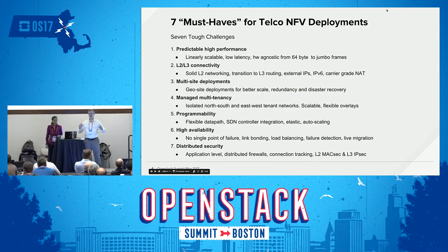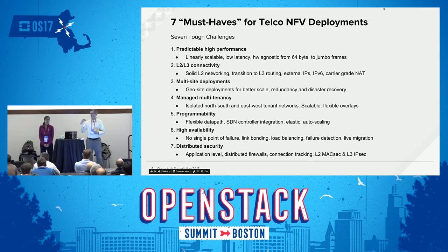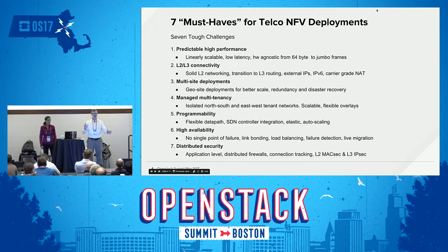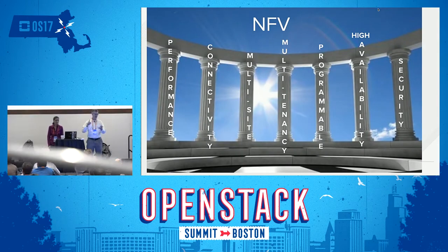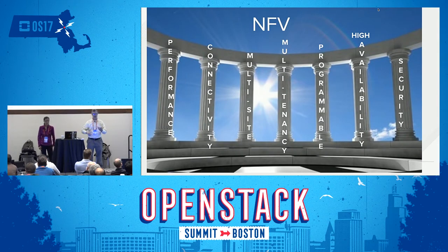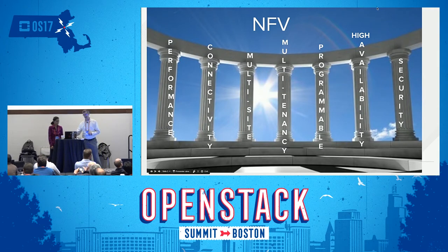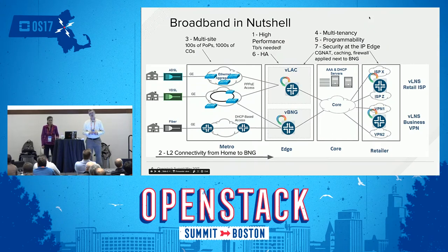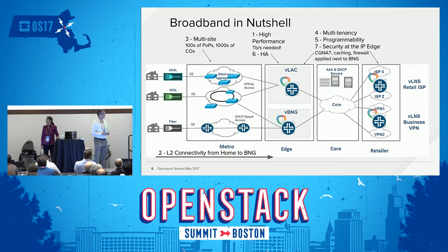We're going to touch on seven key challenges using a very specific application. We were just watching the last presentation — that was thinking about how we would do it. We're going to talk about if you had to do it today or next week, how would we do it? The seven things: performance, connectivity, multi-site, multi-tenancy, programmability, high availability, and security. The use case is broadband networks — virtual broadband network gateway.